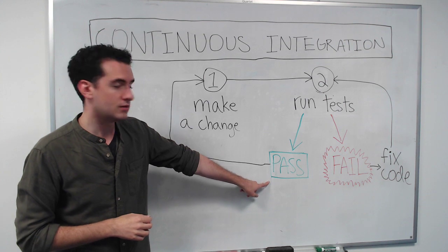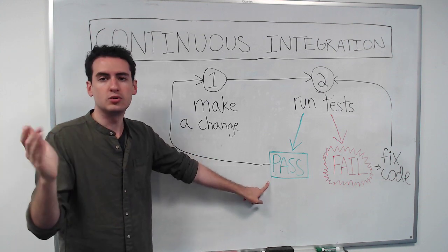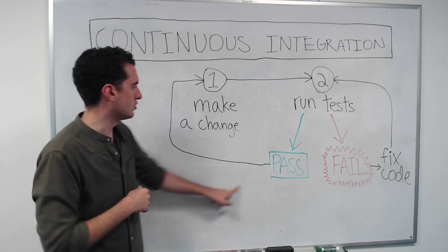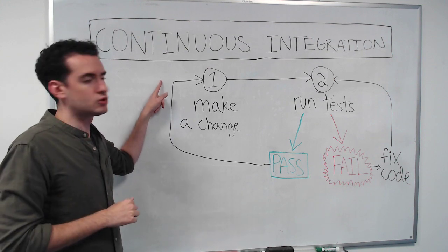If they pass, you're good to go and you can just keep making changes, right? You go right back around, submit another pull request, go wild.